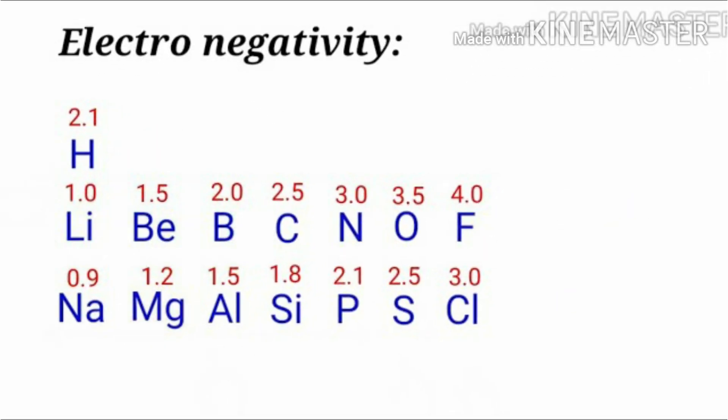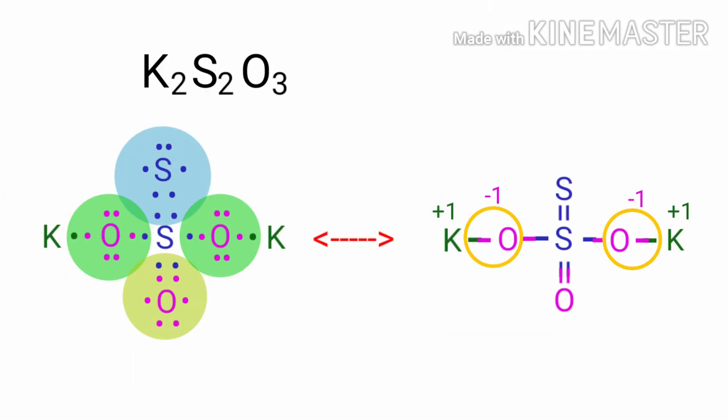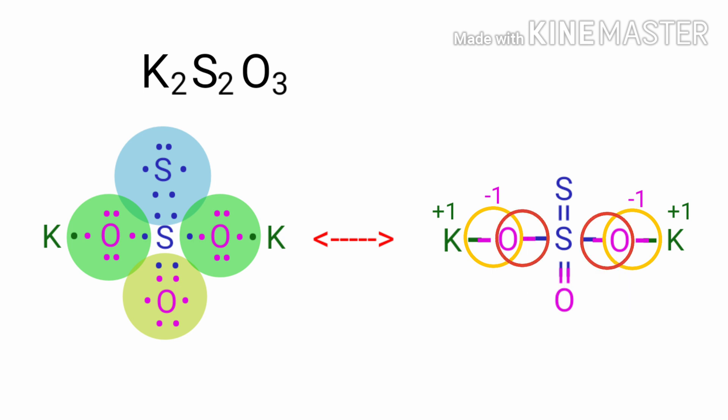As per the electronegativity chart, oxygen has more electronegativity than sulphur. So in the S-O bonds, the oxygen atoms take the bonds towards itself. Therefore the oxidation number of sulphur is plus 1 and the oxidation number of oxygen is minus 1.